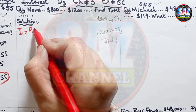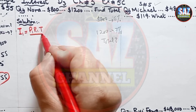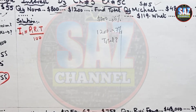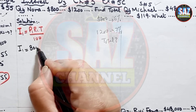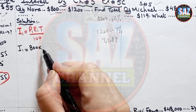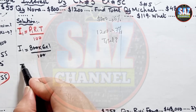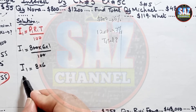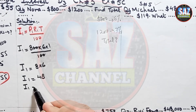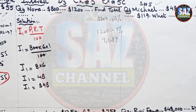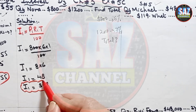For I1: principal is $800, rate is 6%, time is 1 year, upon 100. The two zeros cancel, giving I1 = 8 × 6 = $48.